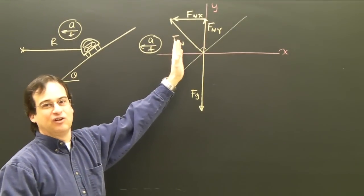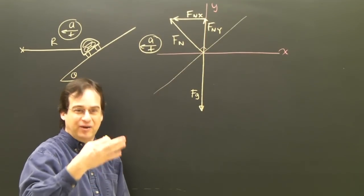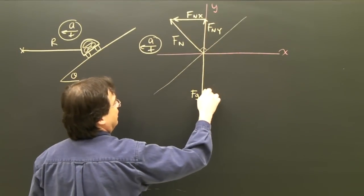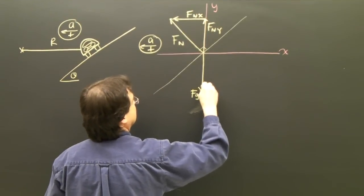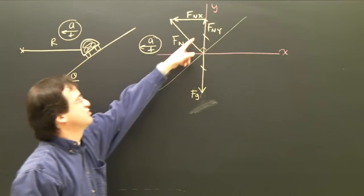If there's no acceleration along the y axis, then everything should add up to zero that way. So that means Fn,y and Fg are supposed to be the same. So I should make that a little bit shorter. And I should indicate that they're the same length that way. So these two are the same.